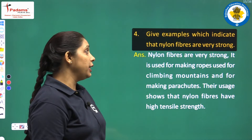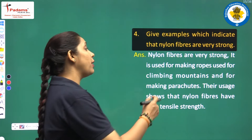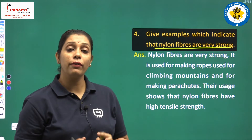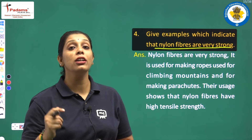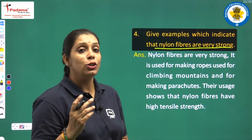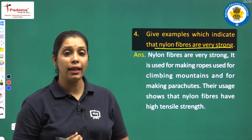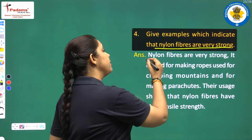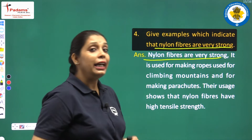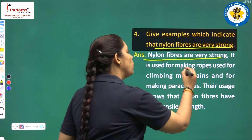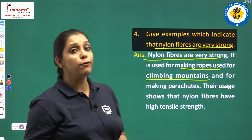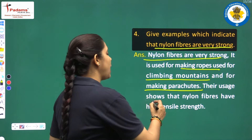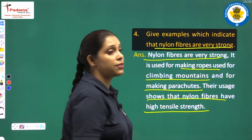Give examples which indicate that nylon fibers are very strong. We had discussed that nylon fibers are very light in weight but they are strong as a wire of steel. So we have to write: nylon fibers are very strong; they are used for making ropes, used for climbing mountains, and for making parachutes. Their uses show that nylon fibers have high tensile strength.